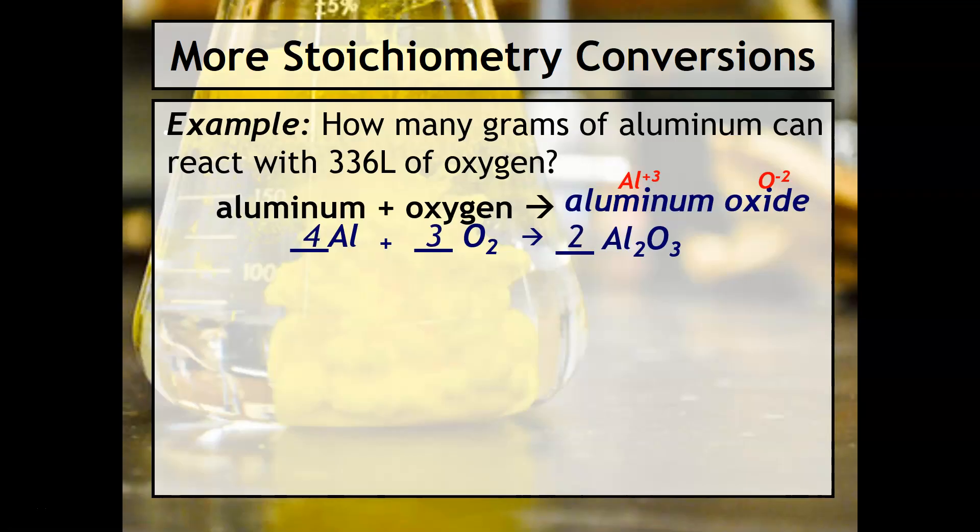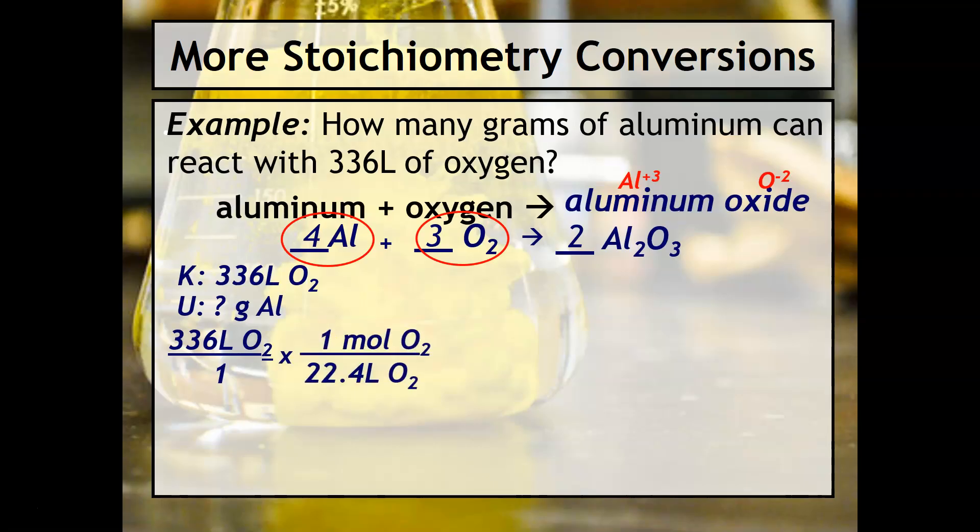Now we're ready to start doing our conversions, so our known is going to be three thirty six liters of oxygen and our unknown is grams of aluminum. The mole ratio is between the aluminum and the oxygen. We'll take our three thirty six over one, draw our multiplication sign, and we then need to relate the fact that it's liters of O2 into moles of O2. The only way to do that is to use the conversion one mole of any substance equals twenty two point four liters. Now since this is a gas, that's why this relationship works. Liters and liters divide out.